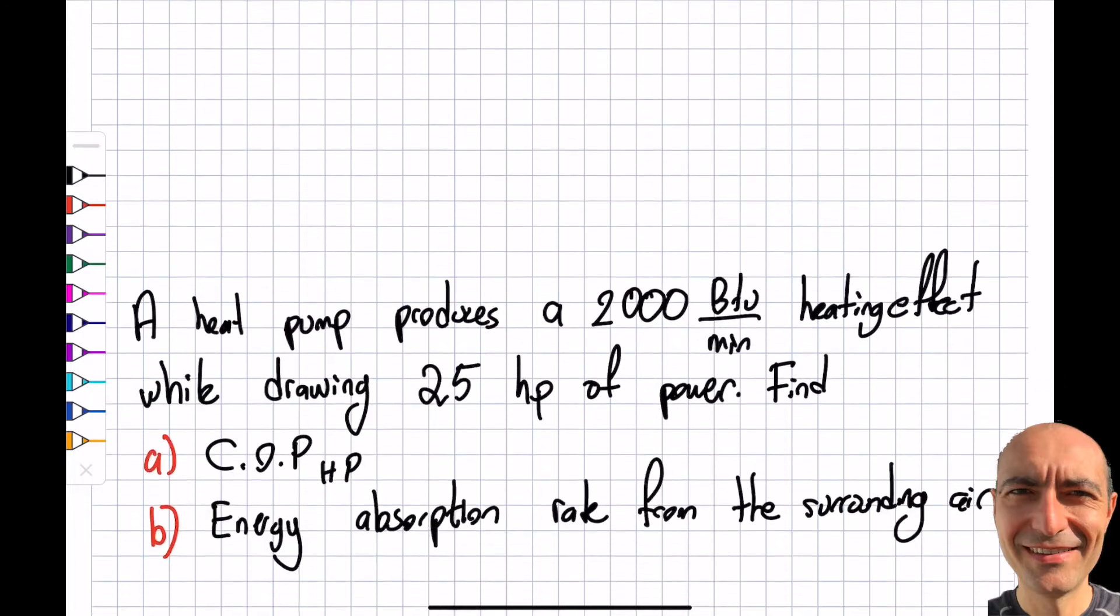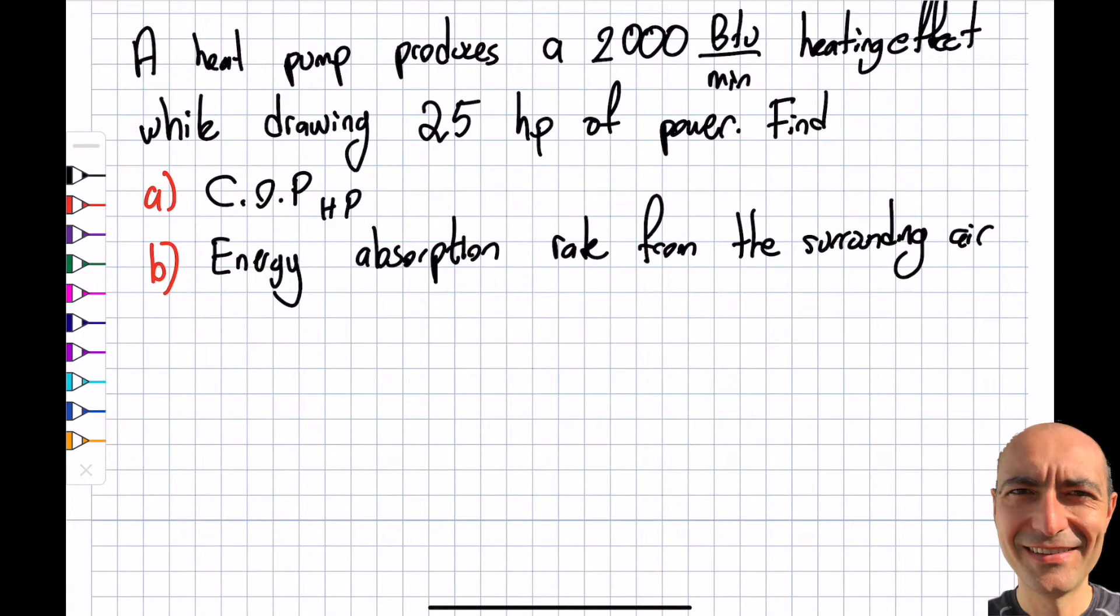Let me do the second one, a heat pump question. A heat pump produces 2000 BTU per minute heating effect while drawing 25 horsepower of power. Find the coefficient of performance for the heat pump and the energy absorption rate from the surrounding air. I'm going to draw this diagram with T_L, T_H, Q_L, Q_H, and W_net_in.